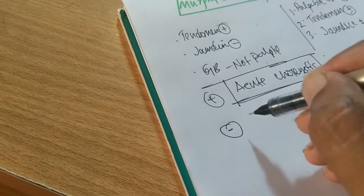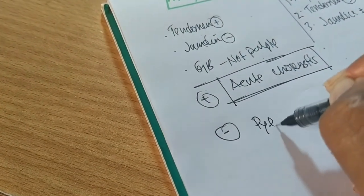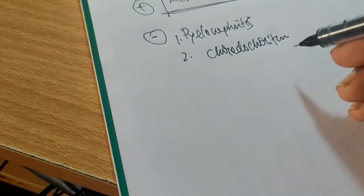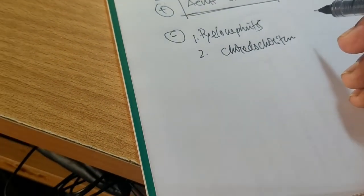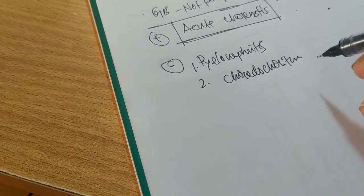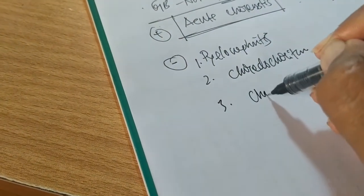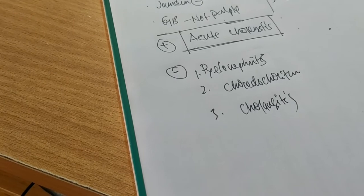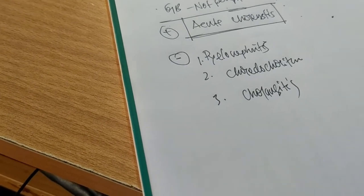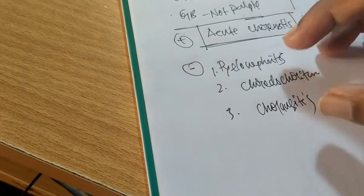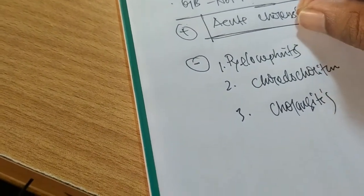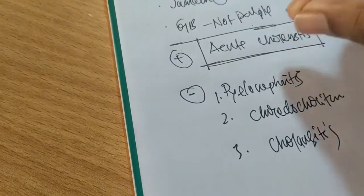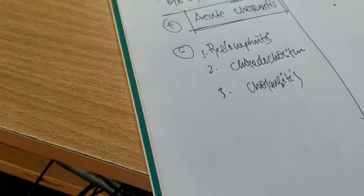The differential diagnoses when Murphy's Sign is negative are: number one, acute pyelonephritis; number two, choledocholithiasis — a stone in the common bile duct where the patient must have obstructive jaundice; and number three, cholangitis, where the patient must have obstructive jaundice and tenderness or pain in the right hypochondriac region may be present. In these three cases Murphy's Sign is negative, whereas in acute cholecystitis Murphy's Sign is positive.